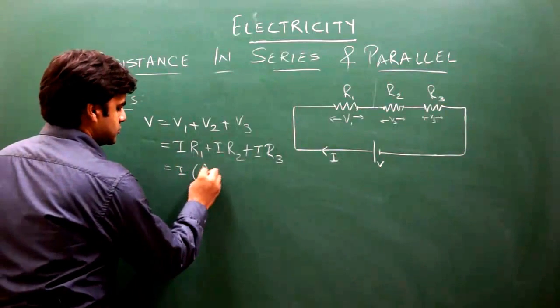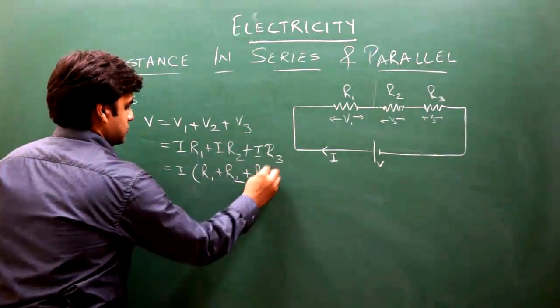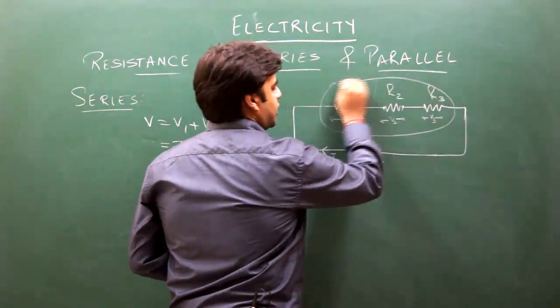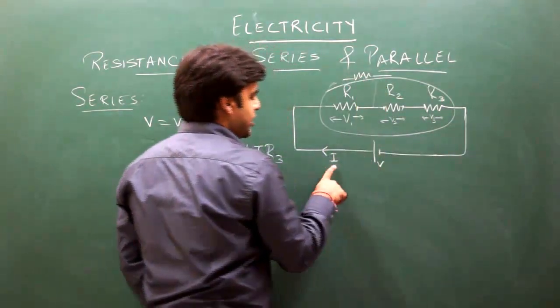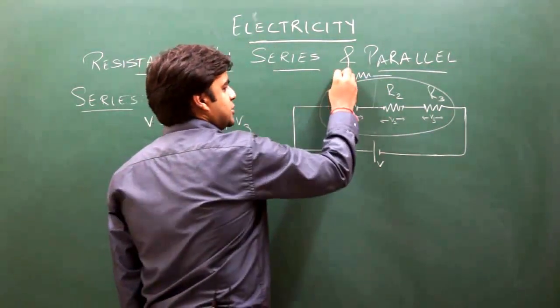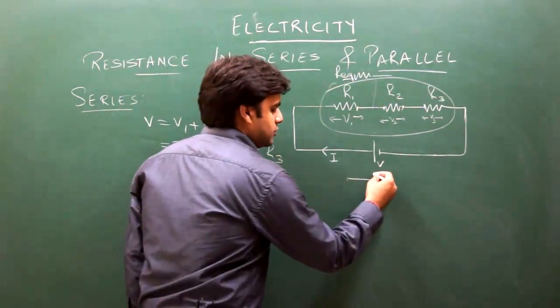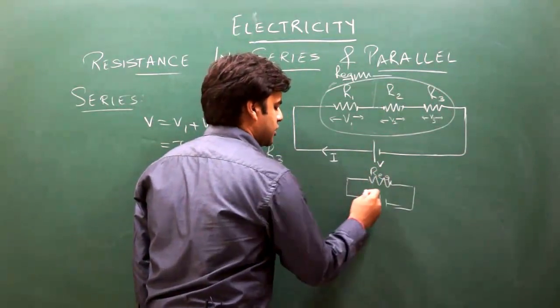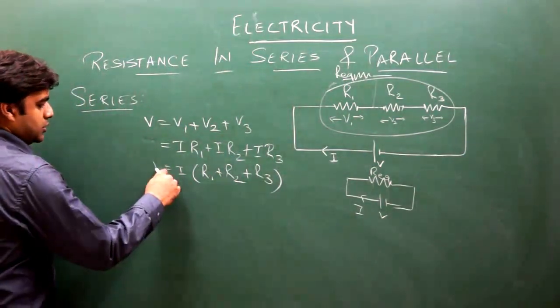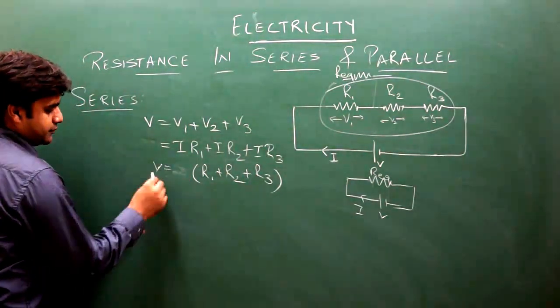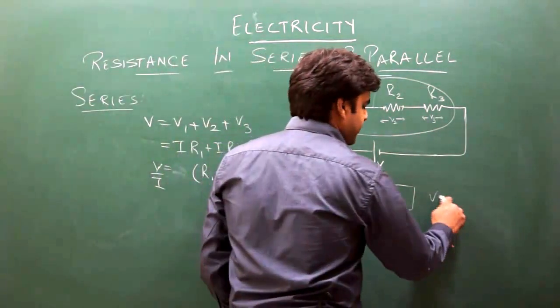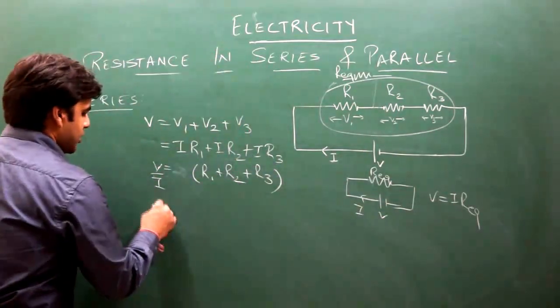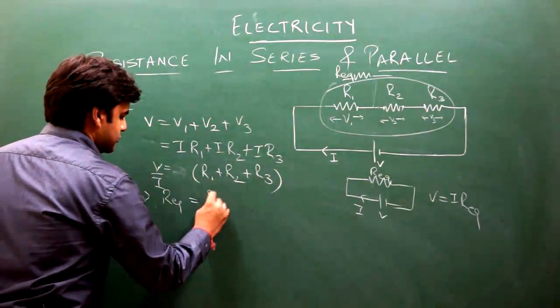I is common. Let us suppose in place of these three resistances, we put only one equivalent resistance such that the same current I flows from the battery. The formula will be V = I into R_equivalent. In this case, V = I into R_equivalent, so R_equivalent = V/I. This implies in series case, R_equivalent will be equal to R1 plus R2